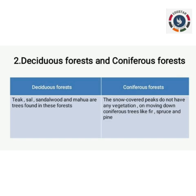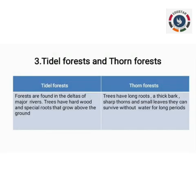Second question: difference between deciduous forest and coniferous forest. Divide the page into two and write deciduous forest and coniferous forest. For deciduous forests: teak, sal, sandalwood, and mahua are trees found in these forests. For coniferous forests: the snow-covered peaks do not have any vegetation, but moving down, coniferous trees like fir, spruce, and pine are found.